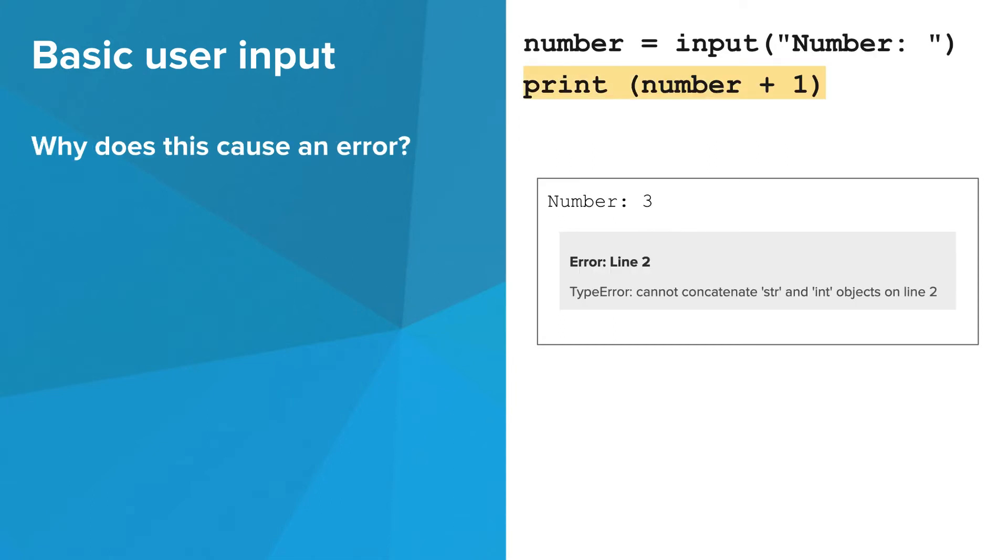This is a problem if you want to perform some mathematical operation on a number entered by the user. The program at the right causes an error because the type of the variable number is str, and you cannot use the plus operator on a str and an int.